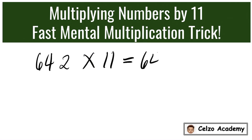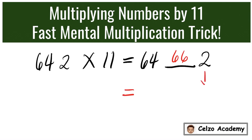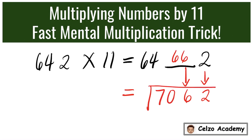Next problem: 642 times 11. The first step is to write 64, space, and the 2. Adding 64 and 2, we have 66. For the final answer, we copy the 2, copy the 6, and now we add 64 plus 6, which is 70. So the answer is 7,062.